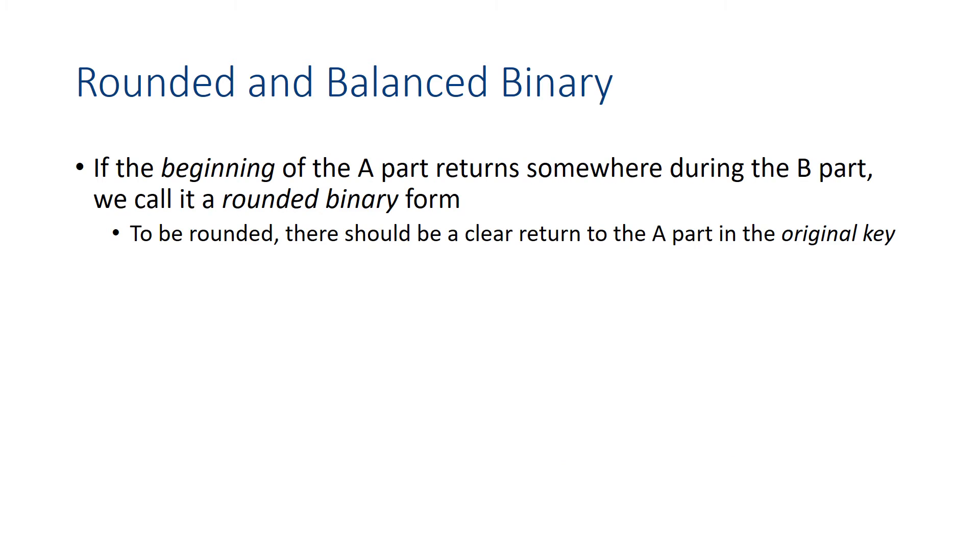Now there are two other terms that are associated with binary. One is rounded binary. If the beginning of the A part returns somewhere during the B part, then we call it a rounded binary form. So to be rounded, there should be some clear return of the A part, and it should be in the original key. Sometimes this rounded binary is described as A, and then in the second part B and half of A, because often half of the A part is returning in the B part. But in some cases, even all of the A part might return in the B part.